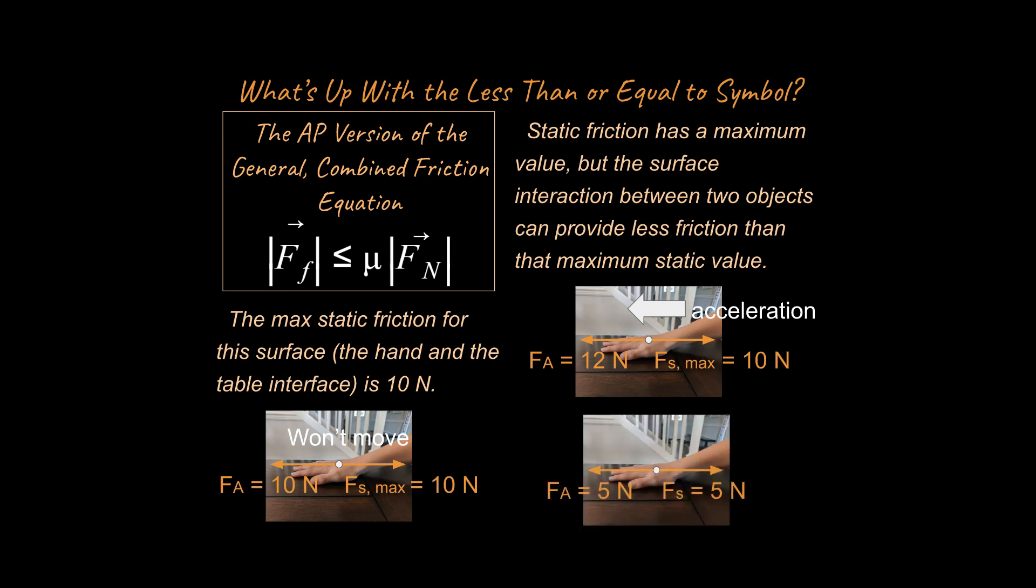Well, what if you still have a maximum of 10 newtons that you can apply before this thing moves? Will it accelerate at this point? What's going to happen is the hand is going to experience a backwards force of only 5 newtons, even though this could be up to 10 newtons, because it's only applying 5 newtons in the forward direction.